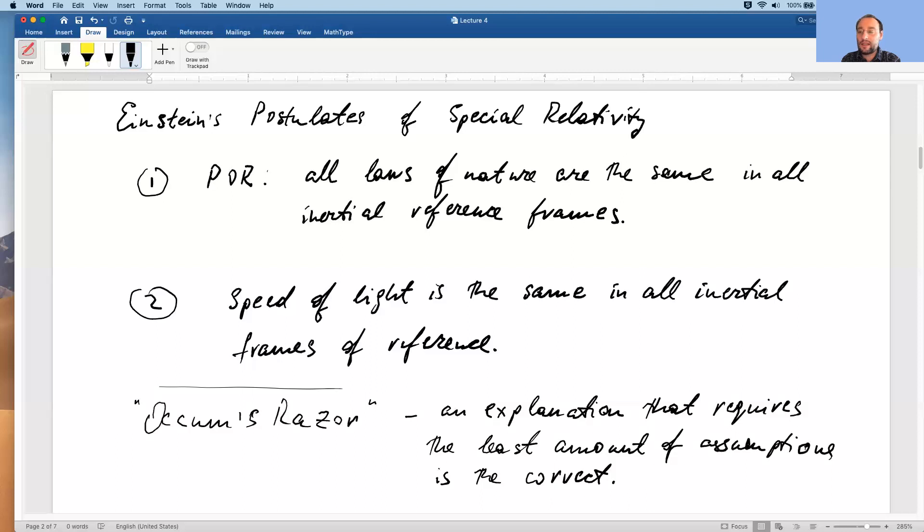All right. So in the following, we will look at the consequences of these two postulates, and that will take us a few lectures. And the first consequence is relativity of simultaneity, which we will do today in portion three.